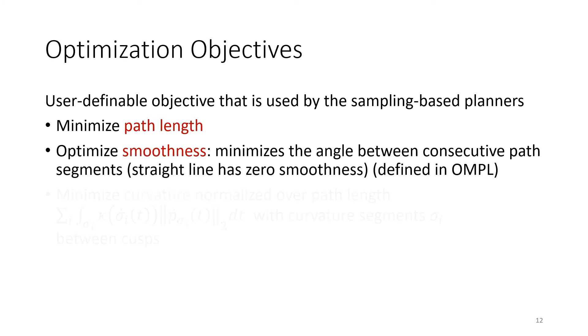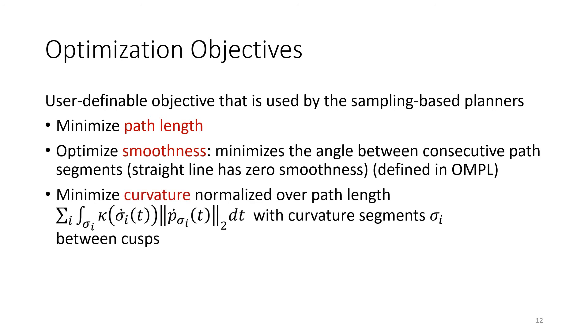Another objective is the curvature normalized over path length, which minimizes the curvature of the path segments between path discontinuities, also known as cusps. Finally, the clearance can be maximized, so that the distance to the nearest obstacle at each point on the path is as high as possible.